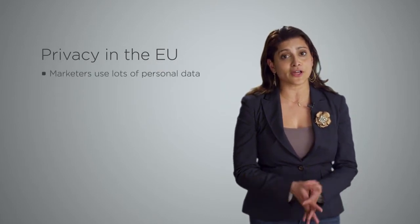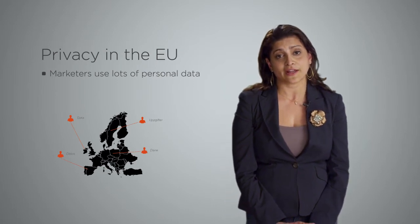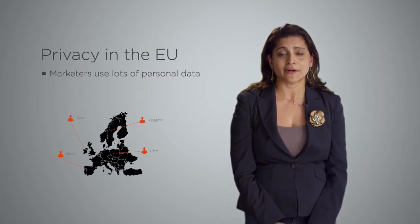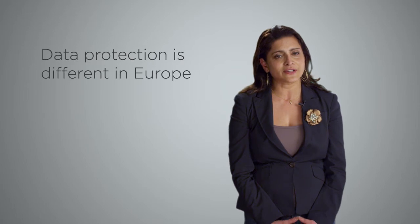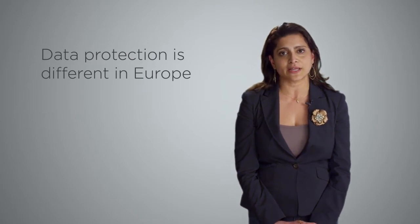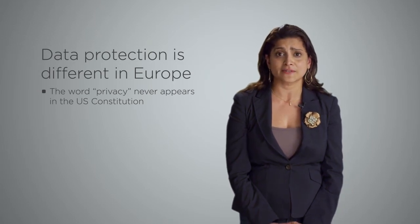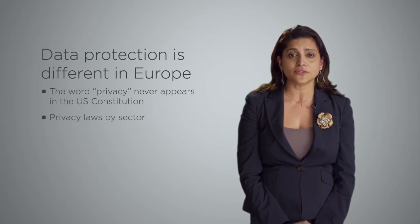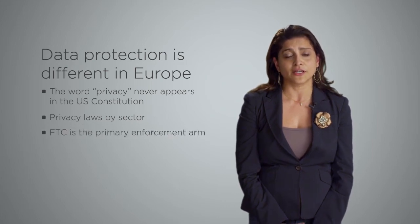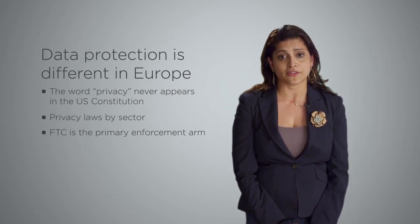As you know, marketers use a lot of personal data when they are targeting customers and when they are planning to advertise to them. So what do you need to know about how the European Union or EU differs from the US? Well, the first thing is that data protection is very different in Europe than it is in the US. In the US, we do not have a fundamental right to privacy, nor do we have a comprehensive federal privacy law. We have state privacy laws and we do have the Federal Trade Commission, which has the authority to come after certain companies if they say one thing and do another.